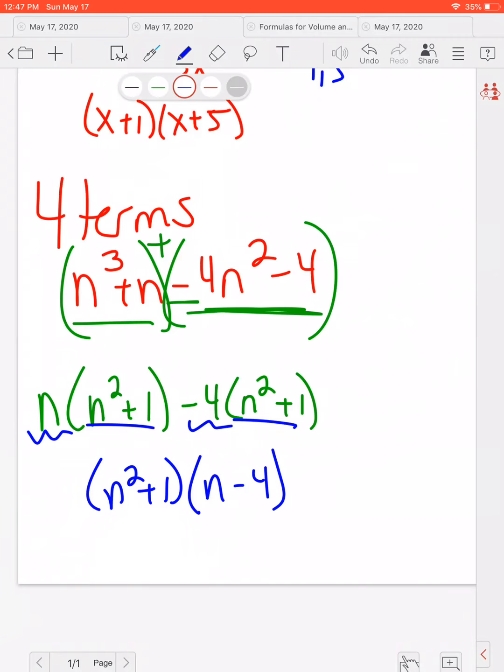Now, after I do my factor by grouping, I should always check and make sure that nothing can be factored down farther inside my parentheses. And in this case, it can't because there's not a minus sign here, so it can't possibly be difference of squares.